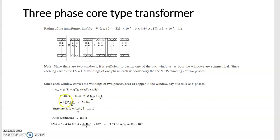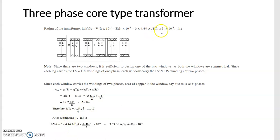Since each window carries 2 phases, the area of copper becomes A1·T1 + A2·T2 + A1·T1 + A2·T2, giving 4·I1·T1 / delta = AW·KW. This is the key difference from single phase. We then multiply the whole equation by 3 and substitute this value into equation 1, obtaining the final output equation of the 3-phase core type transformer: KVA = 3 × 4.44 × AI × B_M × f × AW × KW × delta / 2 × 10⁻³.